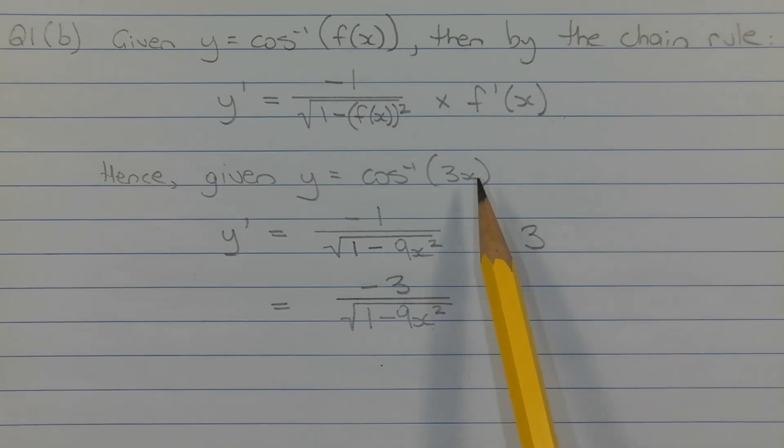multiplied by the derivative of 3x, which is 3. So combining that all together, we get y dash is equal to negative 3 over the square root of 1 minus 9x squared.